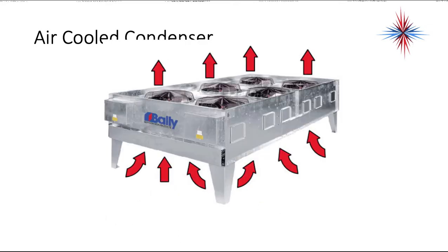This is another example of a very large air-cooled condenser. Notice we're sucking the air through using the fans. By using an upward orientation, cool air comes in the bottom, and as it heats, through natural convection, it moves upward. The fans assist and help pull it through a multi-pass condenser coil.